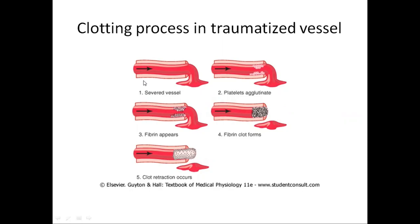This figure shows the clotting process in a traumatized vessel. Whenever there is damage to the vessel, first there will be agglutination of the platelets to form a platelet plug. Then fibrin threads will appear and a clot is formed, and ultimately within 10 to 20 hours, retraction of the clot will take place.